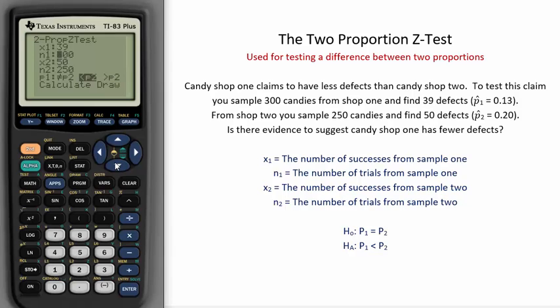Next, from Shop 2 you sample 250 candies and find 50 defects. 50 was the number of successes in Sample 2, and 250 was the sample size in Sample 2. This is a sample proportion of 20%, found by taking 50 over 250.